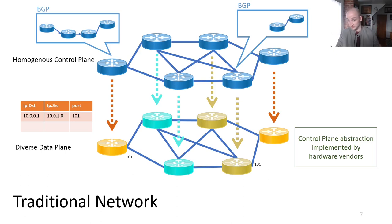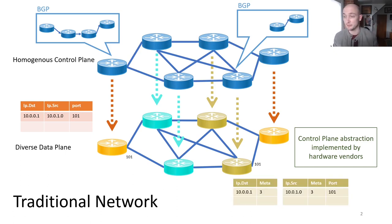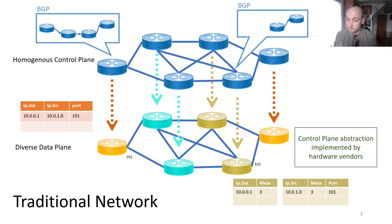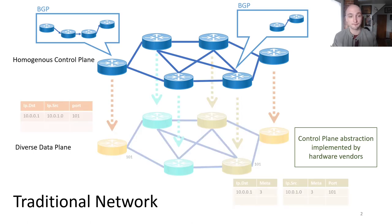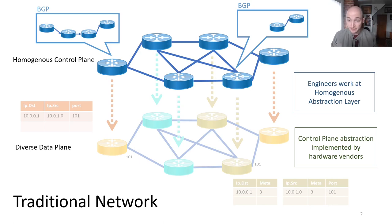Different routers might implement different data plane pipelines. For example, this two-stage pipeline in beige implements the same forwarding behavior across two sequentially composed match-action tables, which we notate using juxtaposition. The first table matches on the IP destination address and sends a temporary metadata value, which is then matched on along with the IP source address in the second table. In this architecture, engineers are oblivious to the pipeline structure on the individual routers — the homogeneous control plane effectively abstracts over the diversity of the pipelines in the data plane, so that engineers only have to reason about these high-level protocols.